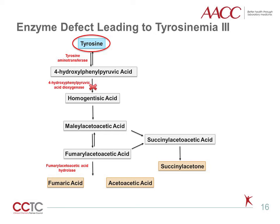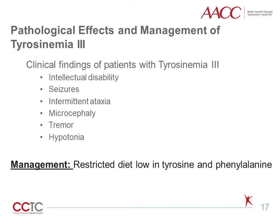Tyrosinemia 3 is the rarest form of the three tyrosine disorders, with only a few cases reported in literature. It is caused by a deficiency in hydroxyphenylpyruvic acid dioxygenase, which converts 4-hydroxyphenylpyruvic acid to homogentisic acid, leading to accumulation of tyrosine. The few affected individuals are known to have intellectual disabilities, seizures, intermittent ataxia, microcephaly, and other skin or ocular changes with no liver involvement. As with the other two types, restricted diets low in tyrosine and phenylalanine are crucial in management.